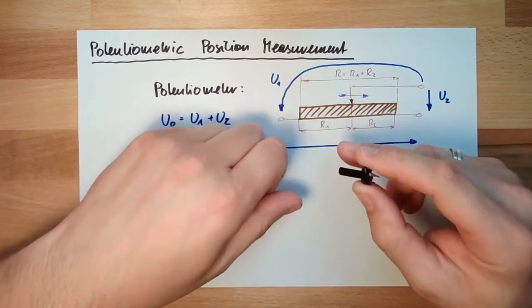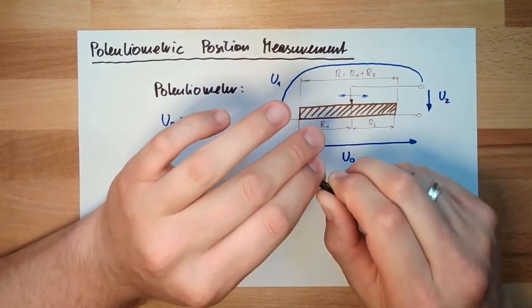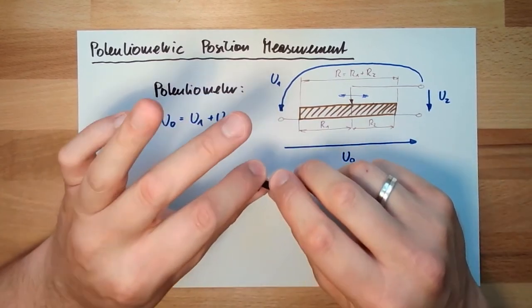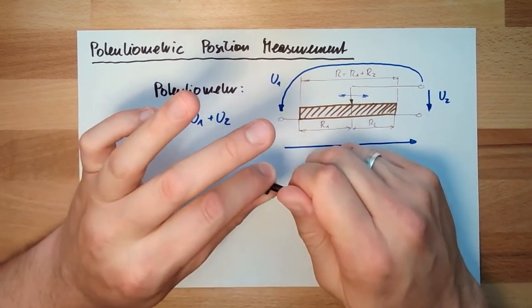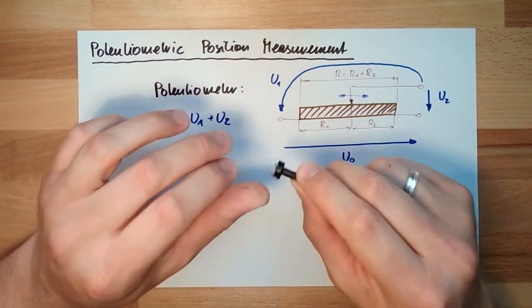We changed by turning, we changed the position and we could measure at which position we are. So this is basically a rotary measurement, angle measurement.